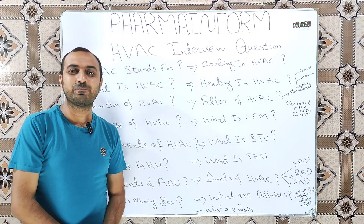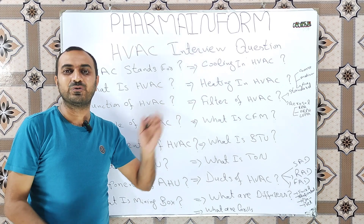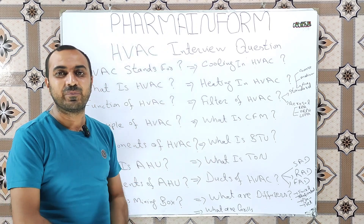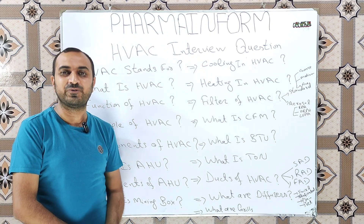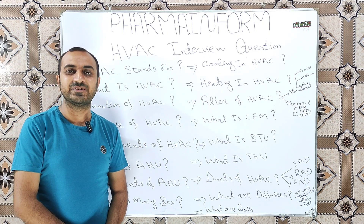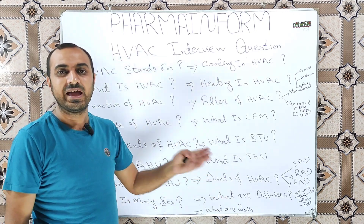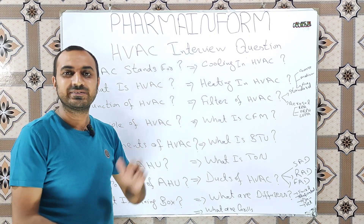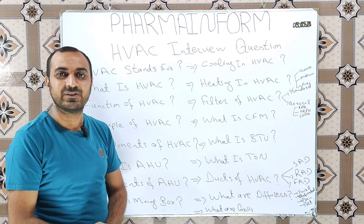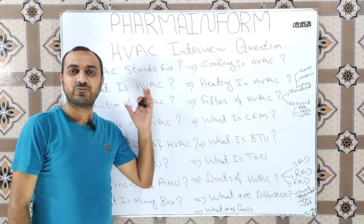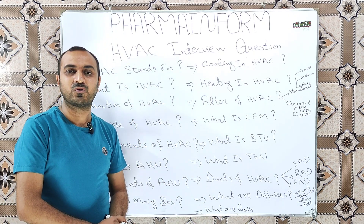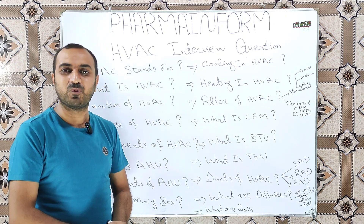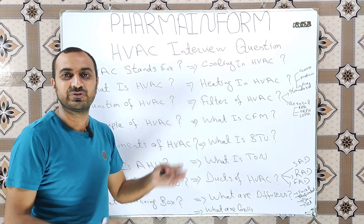The next question is: what is the principle of HVAC? The HVAC works on the principle of air purification and recirculation. The environmental air is first filtered through pre-filters and bag filters, then treated with heating coils and cooling coils, then passed through HEPA filters installed at the end of the supply ducts, and this treated air enters into the area or room. The air from the room is then collected back through the return ducts and returned into the mixing box of the HVAC, and this circulation continues.